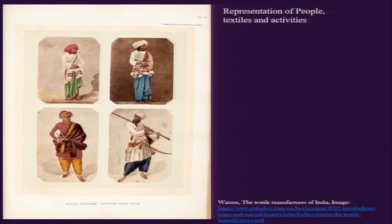We will continue this discussion today by starting with some of the albums and the representation of textiles. In this discussion we will be looking at the representation of people, textiles and activities — these three things — and we will see how they were interconnected in the colonial archive, where particular kinds of albums and documentations were created, focusing on this intertwining of textile, activities, and the prime focus on people whom the British government was ruling over.